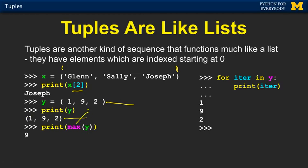Things like max use tuples — it looks through a sequence of things. A list is a sequence, tuples are a sequence, a string is a sequence, and so max looks through them. The for loop basically creates an iteration variable and then bounces through the things that are in a tuple.